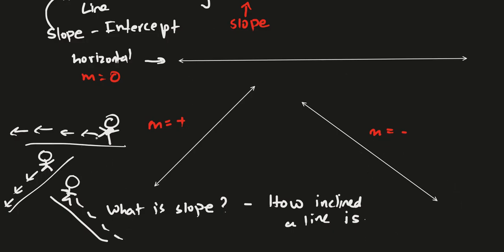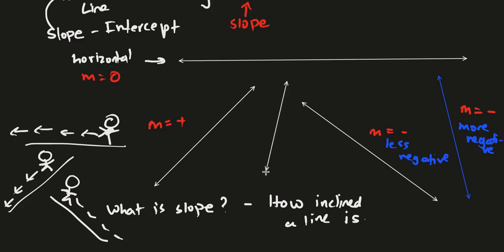If it was in the other direction — a negative slope — you would also go down, but in the opposite direction. If the slope is more inclined, say we insert another line that is also a negative slope but steeper, then m would still be negative but more negative — a larger negative value. A less steep negative line would be less negative. Similarly, a steep positive line would be more positive, while a less steep positive line would be less positive.